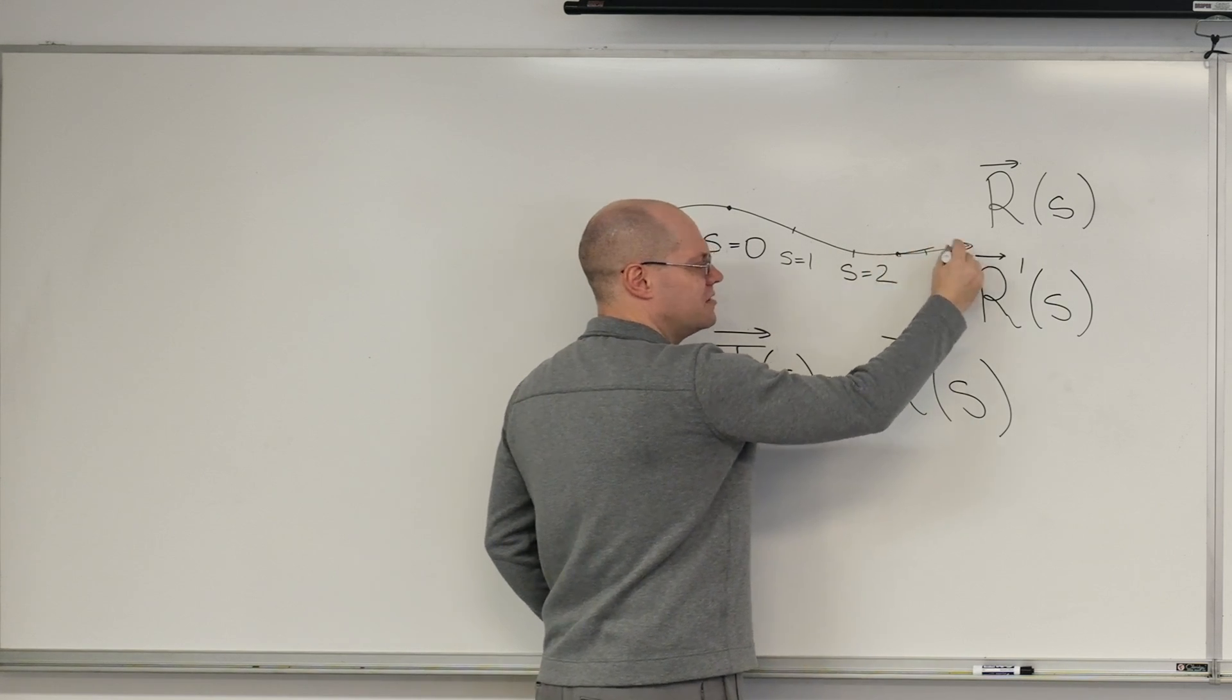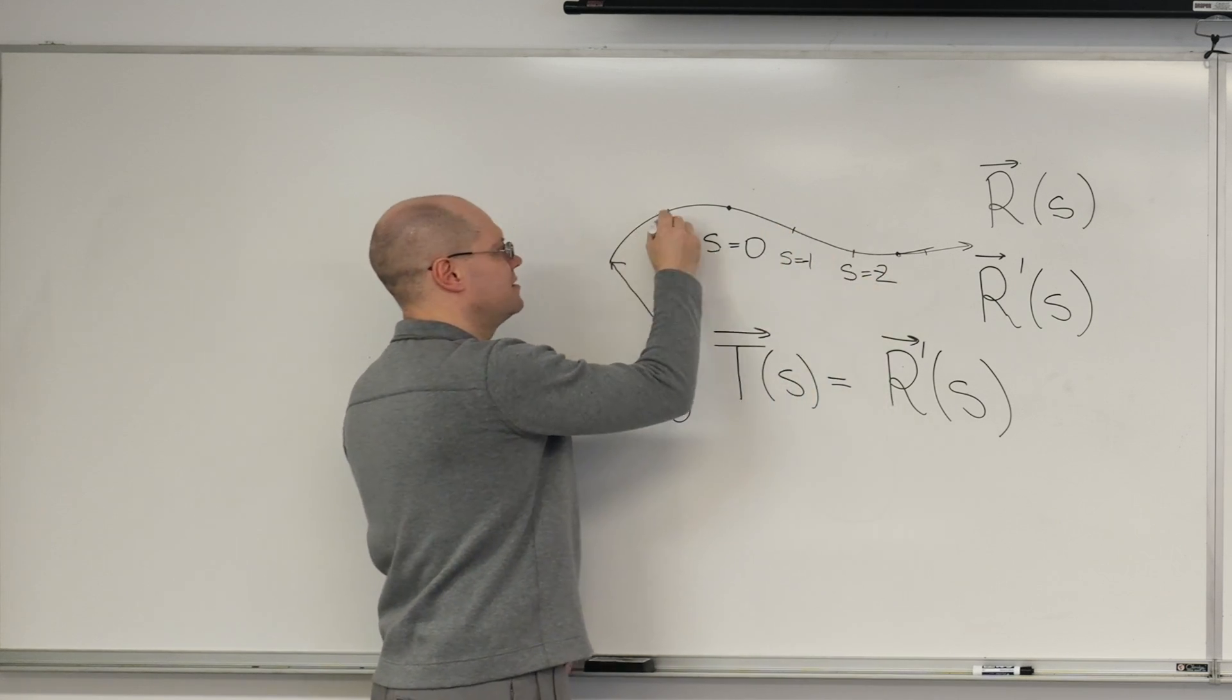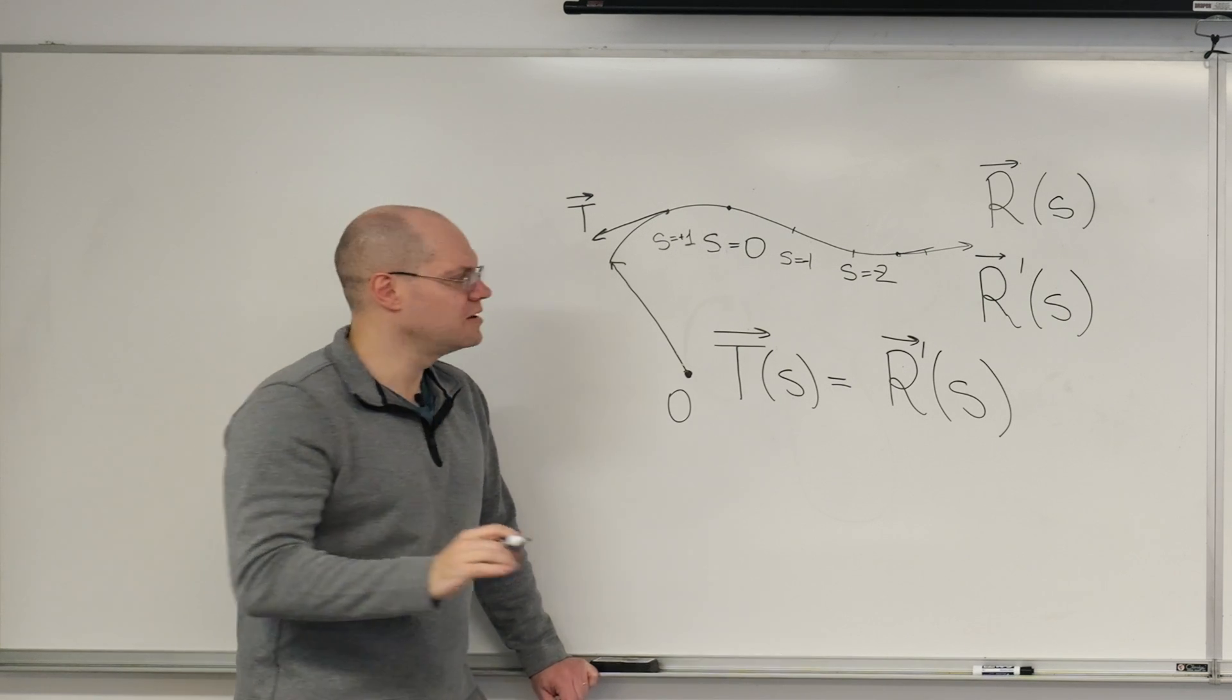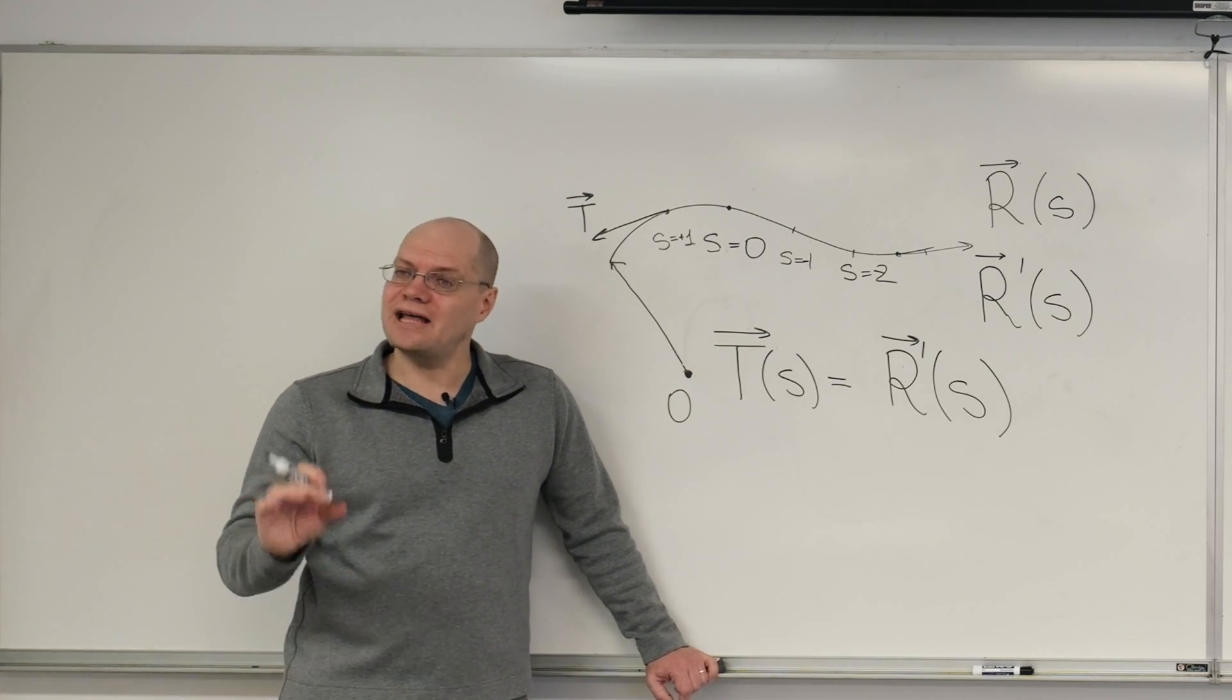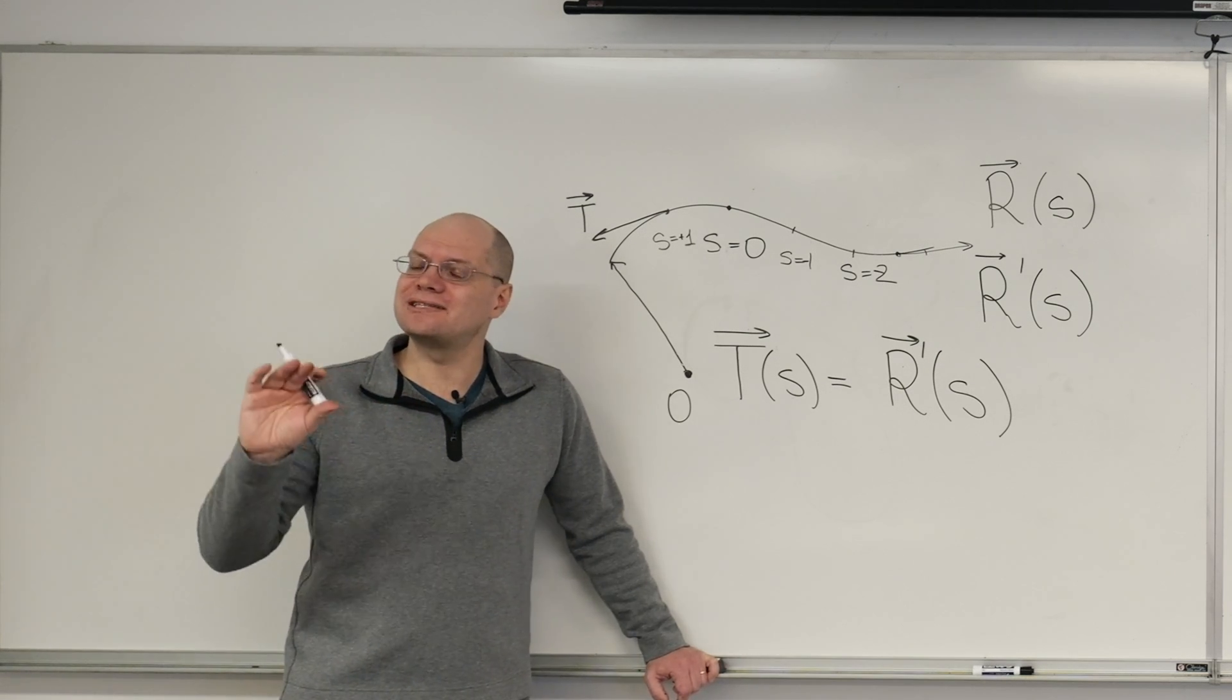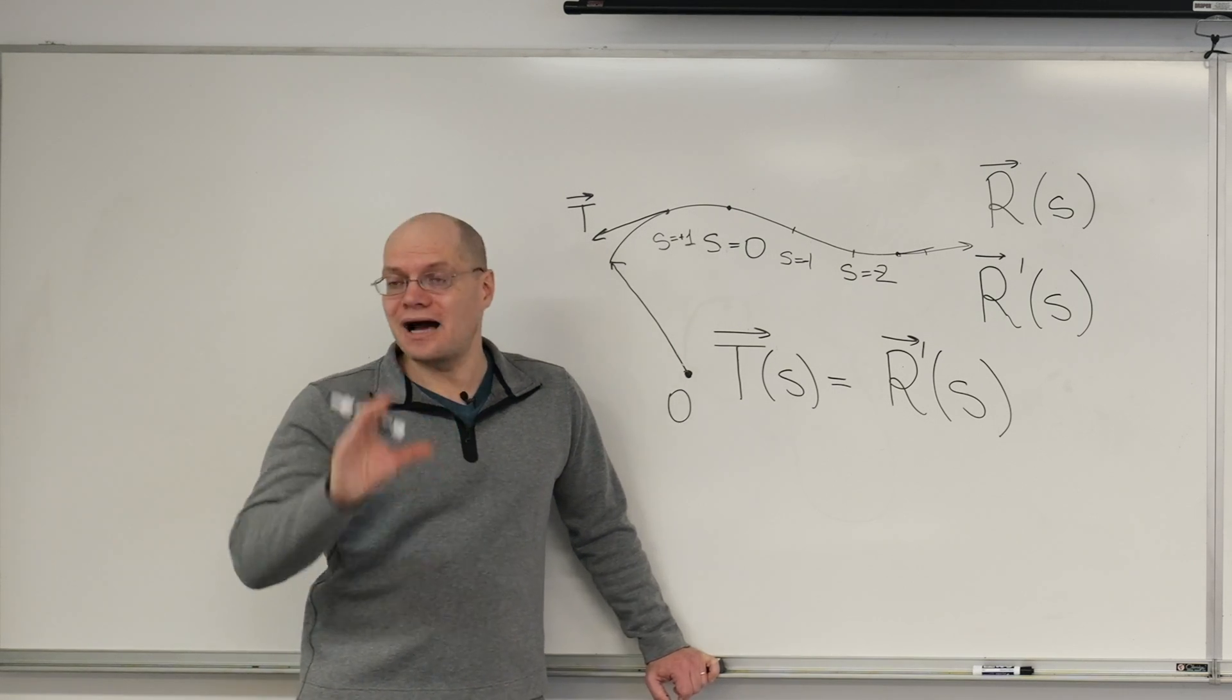And if I let S increase in this direction, then T will point here, just like it does for the parametrization I have on the board. But if I decided that S increases in the other direction, then the derivative, then the unit tangent T will point in this direction. So in that sense, in the orientation sense, it does depend on the choice of the parametrization, but otherwise it's a geometric quantity. So that's what's nice, because when we discover objects that depend on the parametrization, then what are we really studying? Are we studying the curve? Or are we studying the parametrization? Or are we studying some combination of the two? And the answer is the combination of the two.